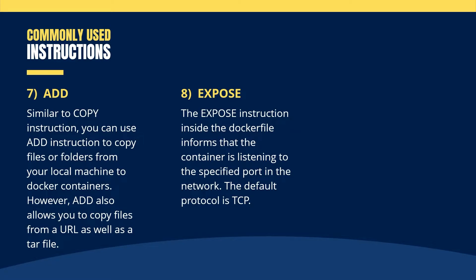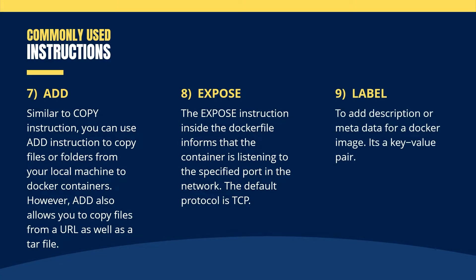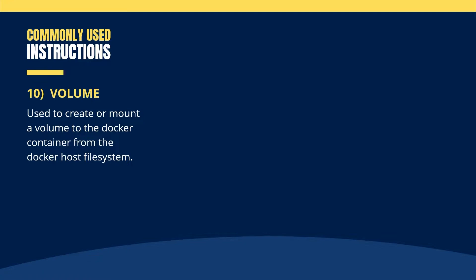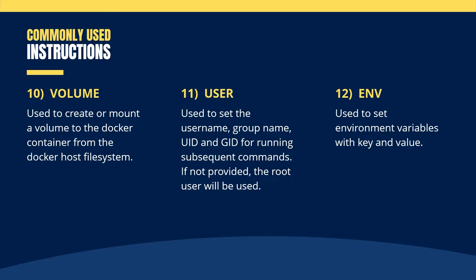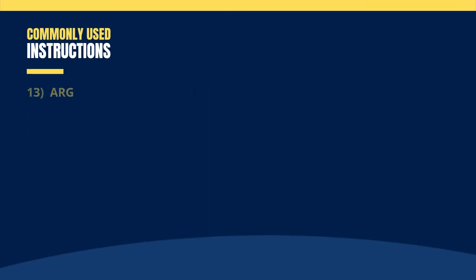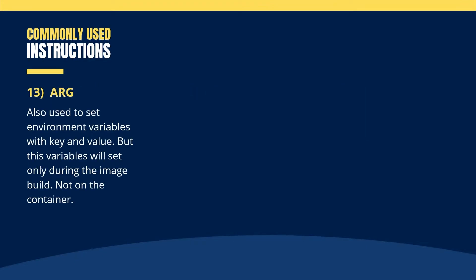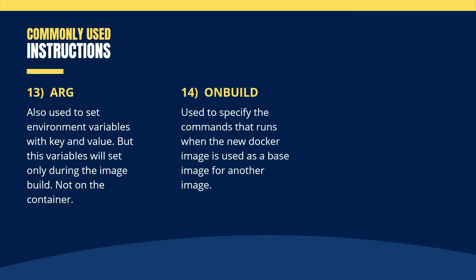Ninth, LABEL — to add description or metadata for a Docker image; it's a key-value pair. Tenth, VOLUME — used to create or mount a volume to the Docker container from the Docker host file system. Next, USER — used to set the username, group name, UID, or GID for running subsequent commands; if not provided, the root user will be used. Next, ENV — used to set environment variables with key and value. Next, ARG — also used to set environment variables with key and value, but this variable is set only during the image build, not on the container. And finally, ONBUILD — used to specify commands that run when the new Docker image is used as a base image for another image.